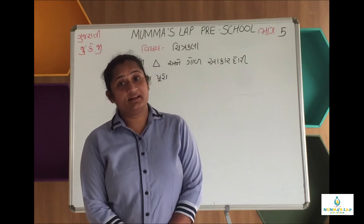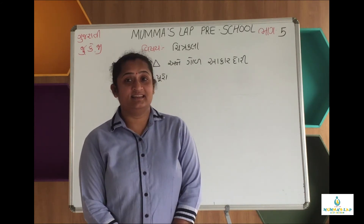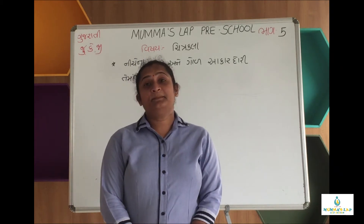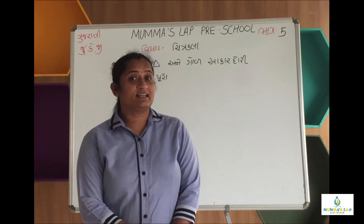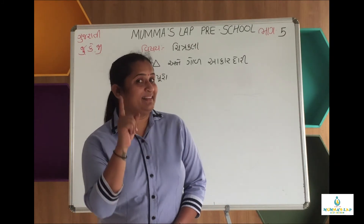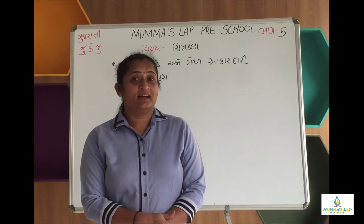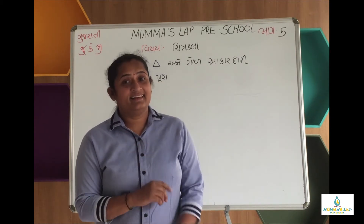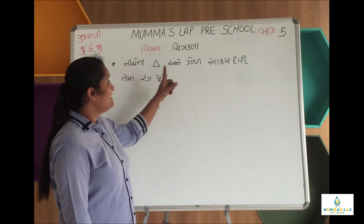ગુલાબની ડાળી ઉપર કાંટા હોય છે. ગુલાબના ફૂલ માંથી સુગંધ આવે છે. ગુલાબ ફૂલ ગમે છે. (Rose stems have thorns. Fragrance comes from rose flowers. Rose flowers are liked by all.)